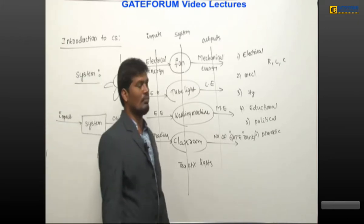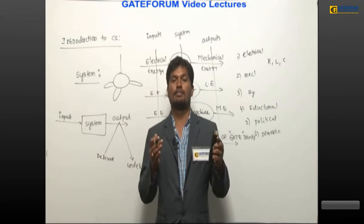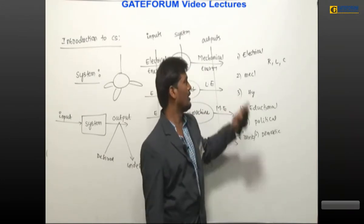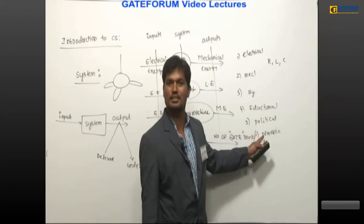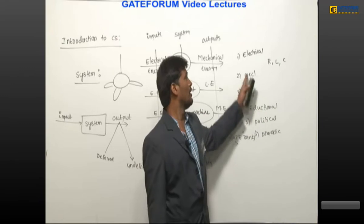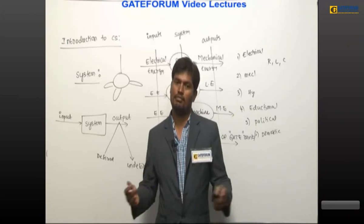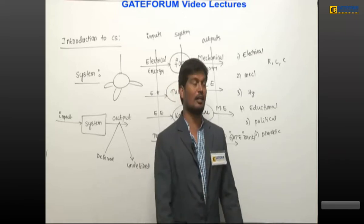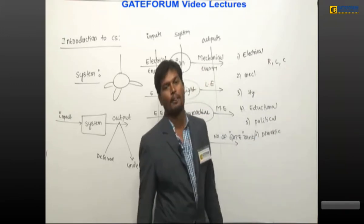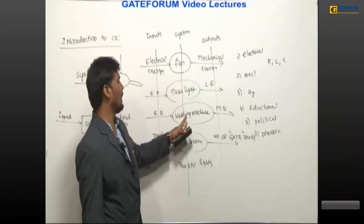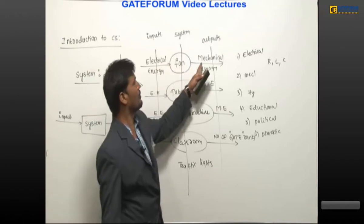A combination of different physical components connected together to perform a certain task is called a system. Examples include: electrical system, mechanical system, hydraulic system, educational system, political system, and domestic system. Mainly we are electrical engineers — in our electrical tree the physical components are resistors, inductors, and capacitors. Other examples of systems are fan, tube light, washing machine, classroom, and traffic lights. In all these examples there is a certain input producing output that may be desired or undesired because there is no regulator.